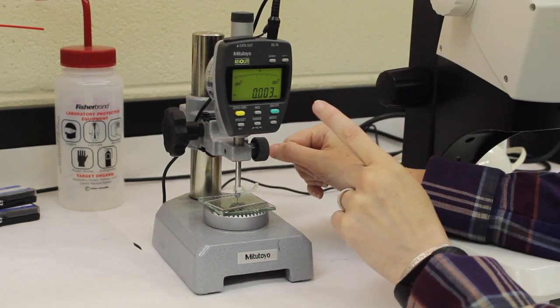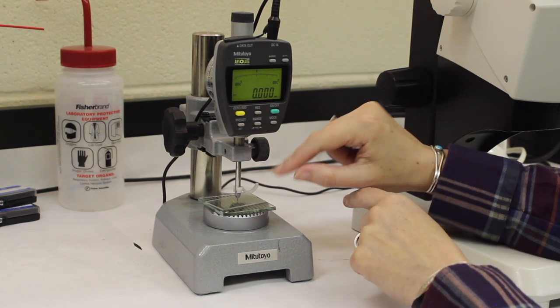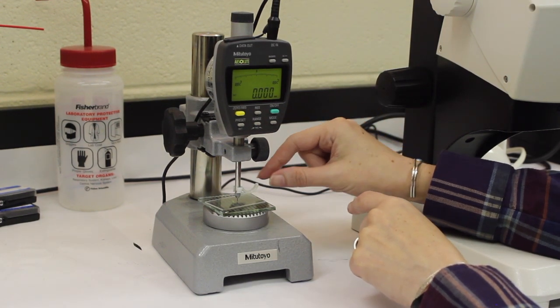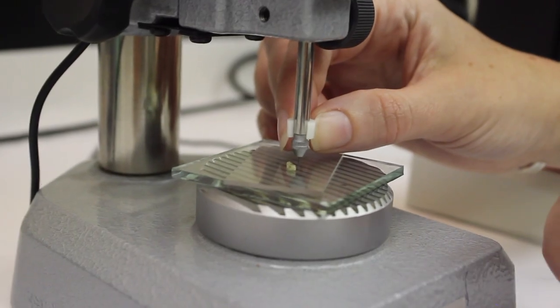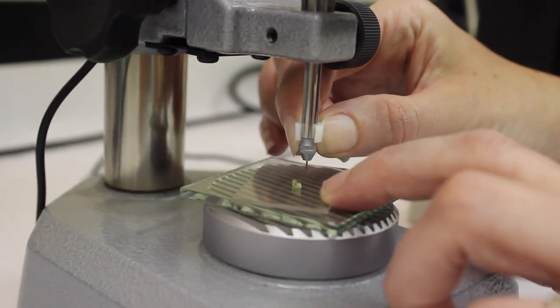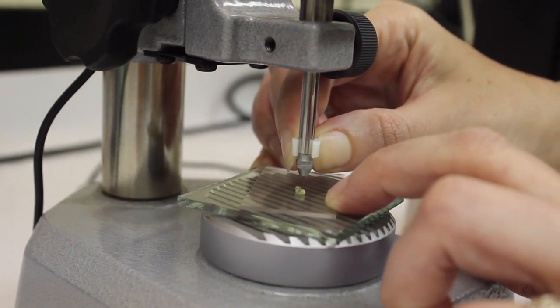And then I'm going to zero this so that the bottom of the sample, which is the top of the slide, is zero. And then I'm going to pull it up and place the little pin on top of the sample like that.